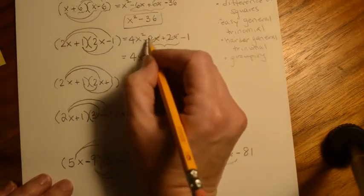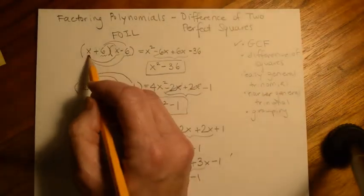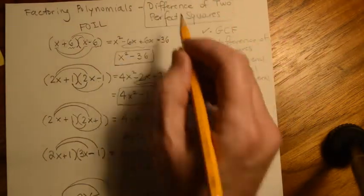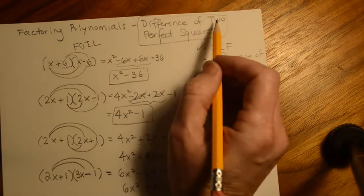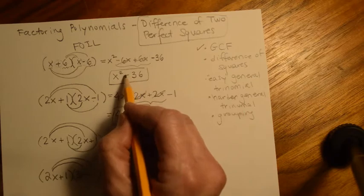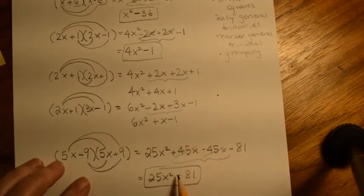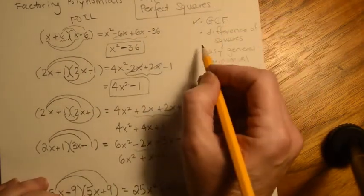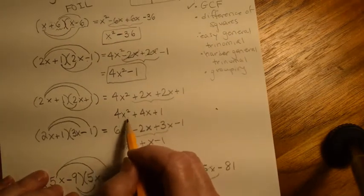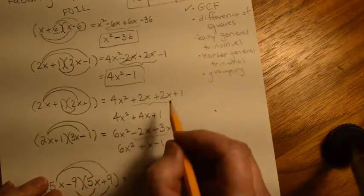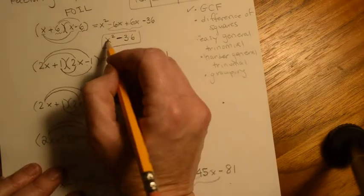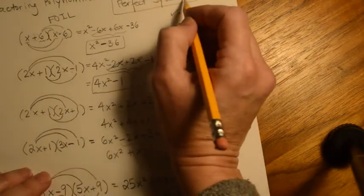Now look at the three examples that had that pattern where both terms in each parentheses were the same but the signs were opposite. The name 'Difference of Two Perfect Squares' tells us everything. 'Difference' means subtraction — notice each result has a subtraction. 'Two' means two terms — in the ones that didn't work we ended up with three terms. And we need them both to be perfect squares.